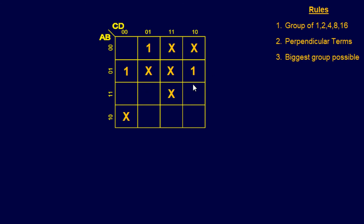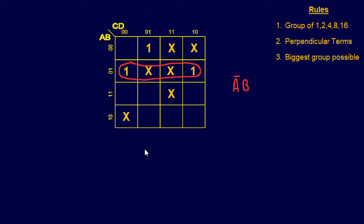We need to make sure our groups tackle all the ones. Off the bat I already see a group that can tackle two ones. Switching colors — I see a group right here. The whole goal is to group your ones; we don't care about the don't cares, hence the term 'don't care.' We have a whole row used, so that group comes out to A-not·B.